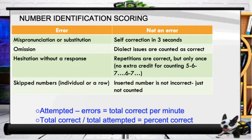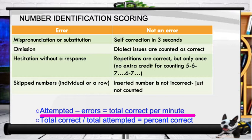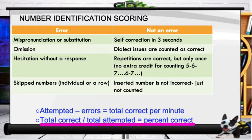With errors and scoring for number identification: a mispronunciation or substitution, an omission, a hesitation without a response, or a skipped number — individual or entire row — are all counted as errors. It is not an error when the student self-corrects within three seconds, if there's an accent or dialect issue, a repetition, or if they insert a number incorrectly. Attempted numbers minus errors gives total correct per minute; total correct divided by total attempted gives percent correct.